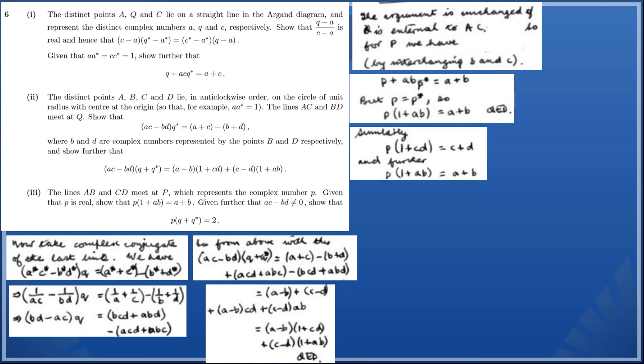Similarly, we can do the same for the CD term as well, so p(1+cd) = c+d. So now what we've got is two separate equations. What we've done is simply divided by p on the previous two results that we've just derived.